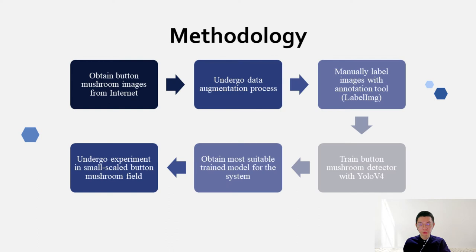I would like to move on to methodology. There are six main procedures: first, obtain button mushroom images from internet for training; then those images undergo data augmentation to produce more images; button mushrooms are labeled manually using annotation tool labeling; the images are used as input to train the system; when training is complete, a suitable trained model is selected; and the system undergoes experiment in small-scale button mushroom field.